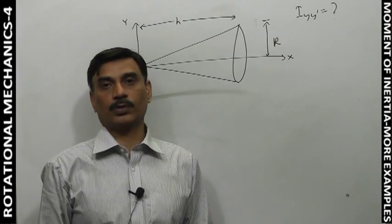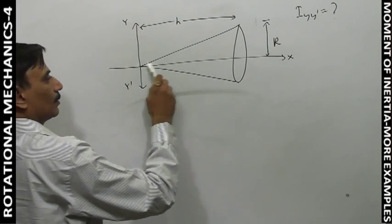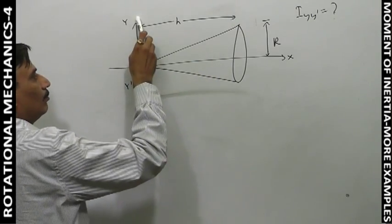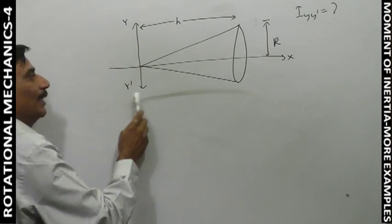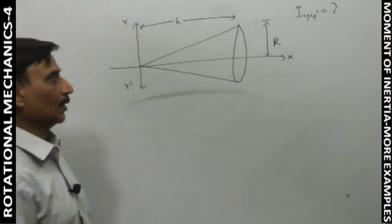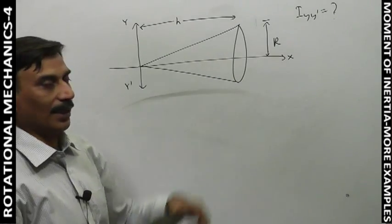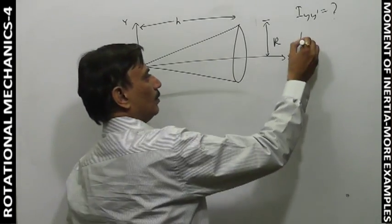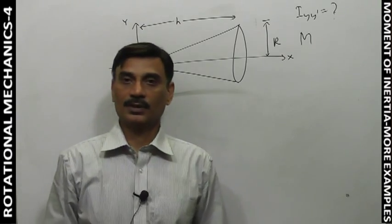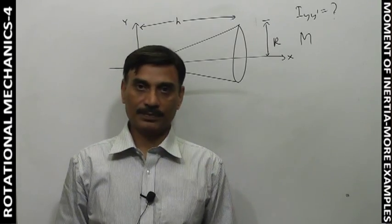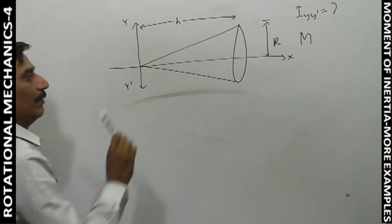A solid right circular cone is lying like this. We have to find the moment of inertia about the yy' axis. This height is h, radius is r, and the mass of this solid right circular cone is m. We are supposed to find the moment of inertia about the yy' axis.